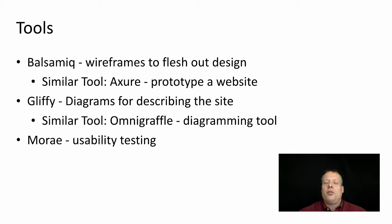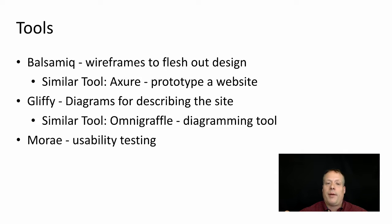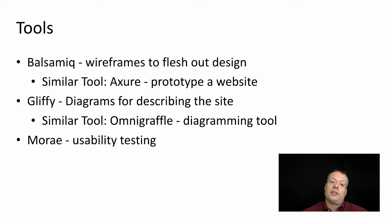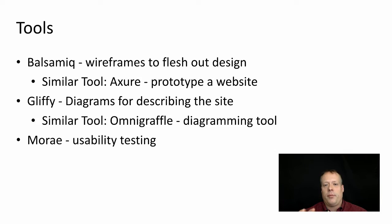For the information architecture — the sitemap and things like that — it's useful to use diagramming tools of various kinds. One that seems to be very popular among website designers is Gliffy, which allows you to do online design. Almost all these tools allow you to do online design, share those designs with each other, and comment on them. A similar tool to Gliffy is OmniGraffle, which I use quite a bit. It's an app for Mac that provides the ability to put together simple hierarchical graphs and diagrams.